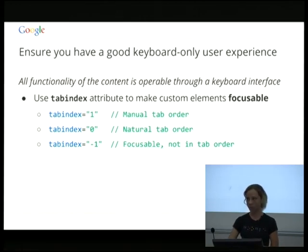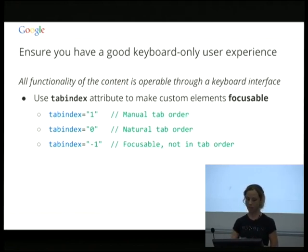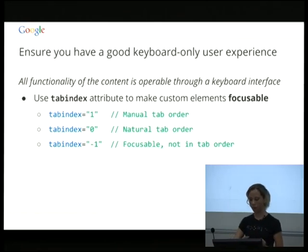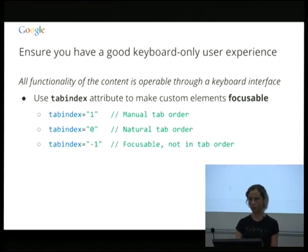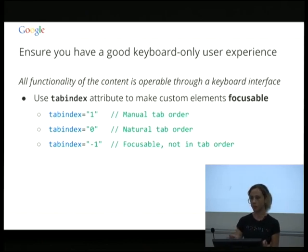Tab index is pretty straightforward. The slight complication is the different values it can take. Tab index greater than zero is a manual tab order — use at your own risk, because you have to be careful that things stay in the right order. All of those will come before anything with tab index zero. Tab index equals zero means it follows the natural DOM order of the page. Tab index minus one means it can take keyboard focus but you'll have to focus it programmatically — not in the tab order, for things like menu elements.